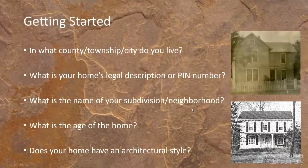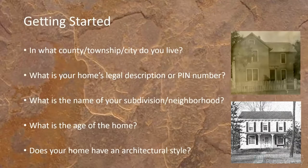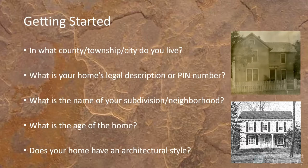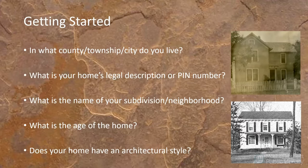When you begin the process of tracing your house history, there are a number of things to consider. You want to ask yourself a series of basic questions — many already available on your closing papers. You'll know your address, but do you know your legal address? That legal description will vary: in a town it might be a block and lot number; out in the country it might include section, township, and range, like 'Section 14 of Township 36, east of the third prime meridian.'